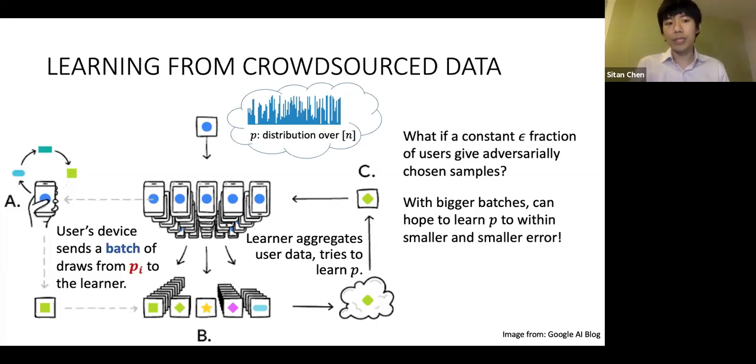To make the setting more realistic, every user doesn't have exact sample access to p. Maybe user i only has sample access to some distribution p_i, where p_i is only promised to be somewhat close to the true distribution p. We want to tolerate these deviations from user to user. This kind of setting sometimes goes under the name federated learning.